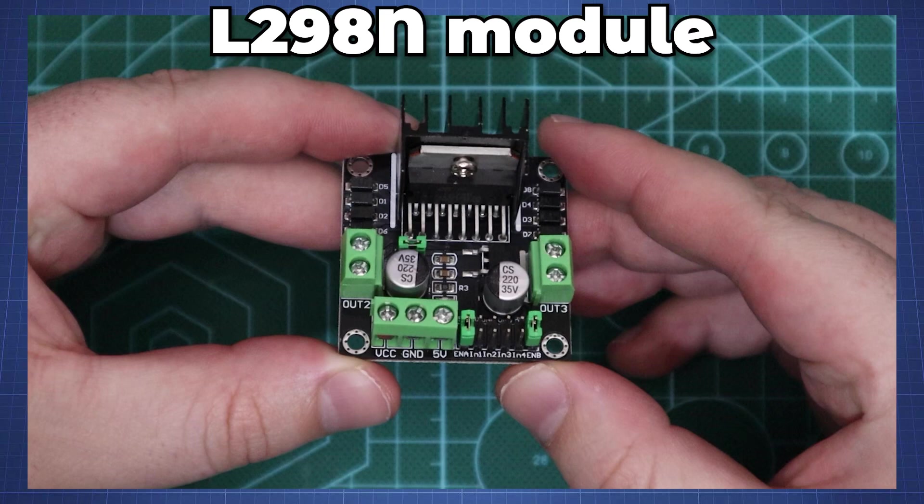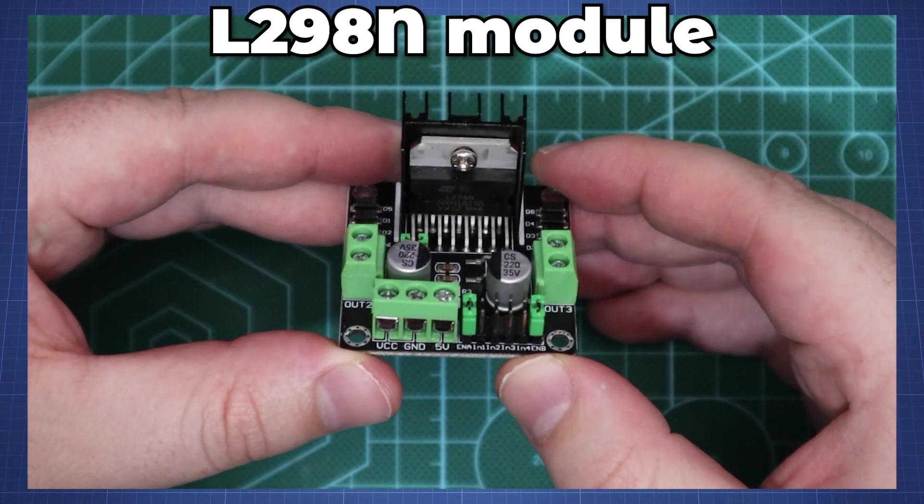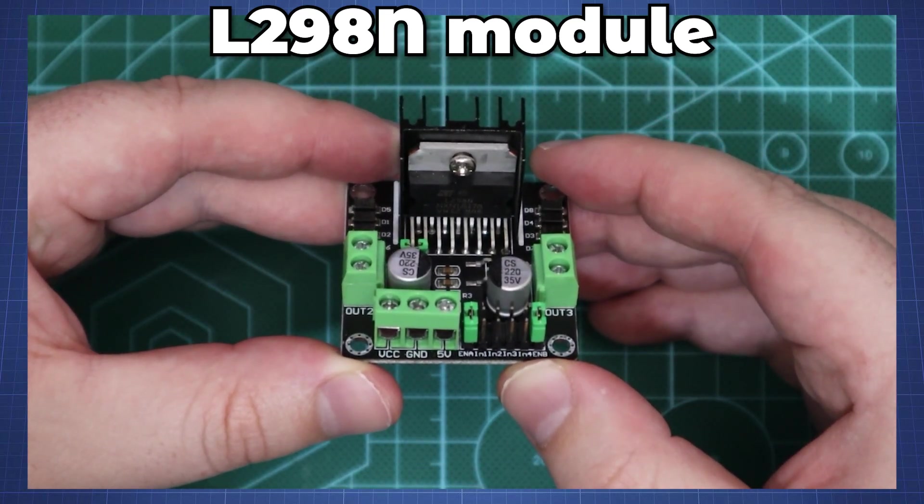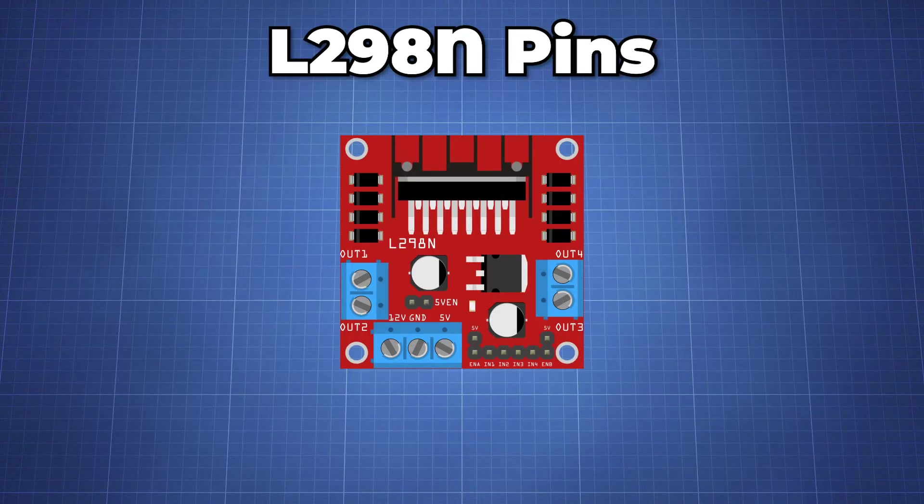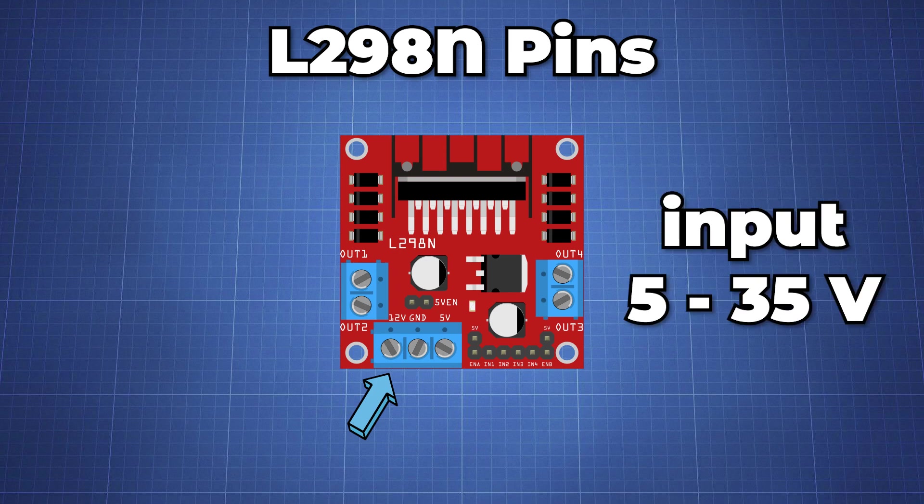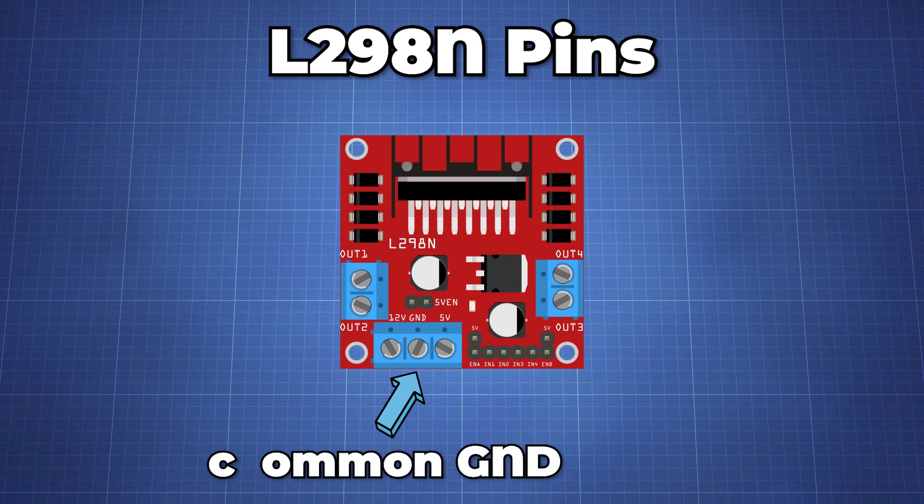The L298N comes in different packages depending on the module but the most common one you will see in every DIY video will look like this. We have the motor power input pin VCC here in the front which takes an input of 5V to 35V with a peak current up to 2A. The input next to it has a common ground with all the power supplies.